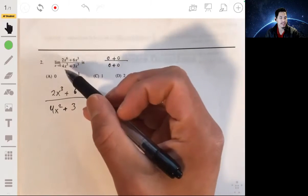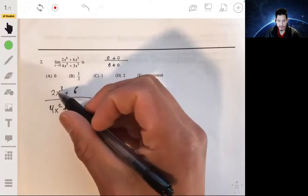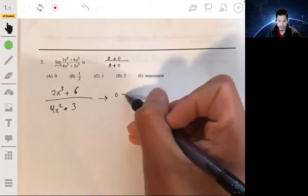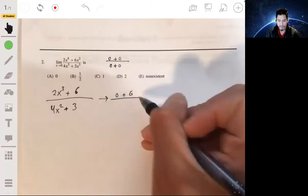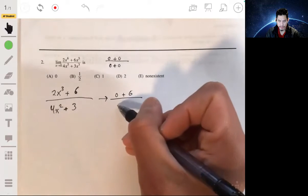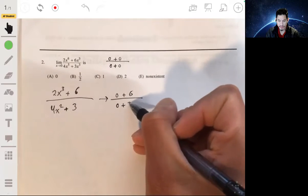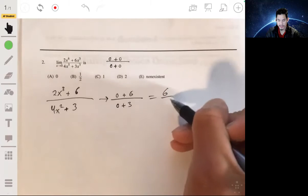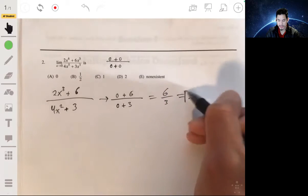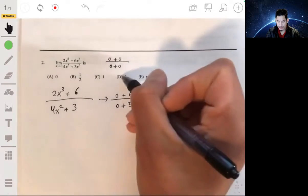Now, let's see what's going on. If you plug in 0 into x here, you would get 2 times 0, or 0, plus 6 on top, and then 4 times 0 plus 3 in the bottom. We have 6 over 3, which is just 2. So the answer is d.